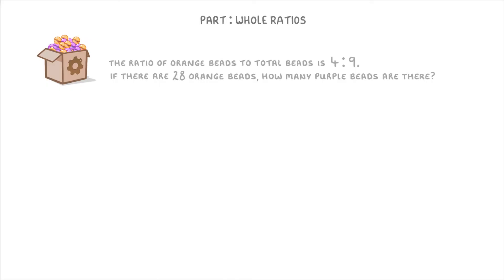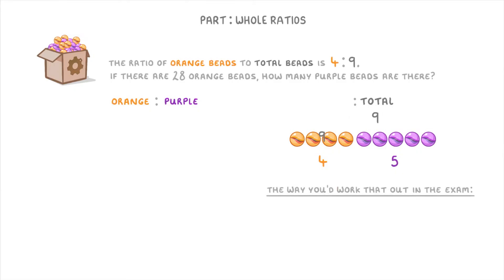So like before, the first thing we want to do is find out the ratio of orange beads to purple beads. And because we have nine beads in total, and only four of them are orange, we know that five of them must be purple. And the way you could work that out in the exam is to do nine minus four to get five. So our ratio of orange to purple beads is four to five.